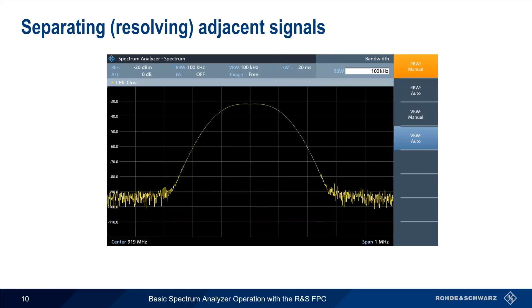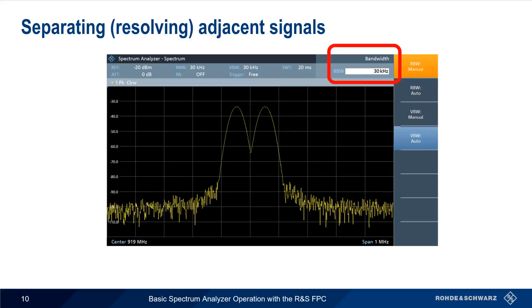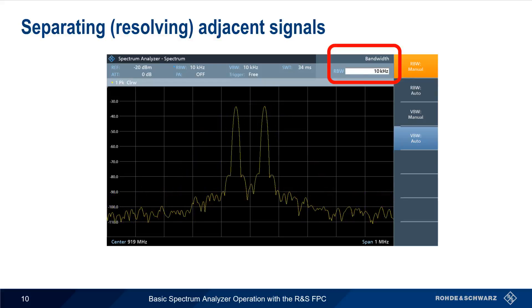The other major impact resolution bandwidth has is on our ability to resolve or separate adjacent signals. Resolution bandwidth determines the spacing of signals that we can resolve. As we lower the resolution bandwidth, we can separate more closely spaced signals.